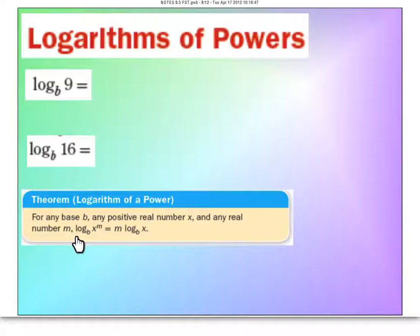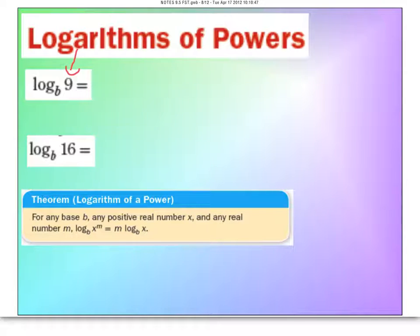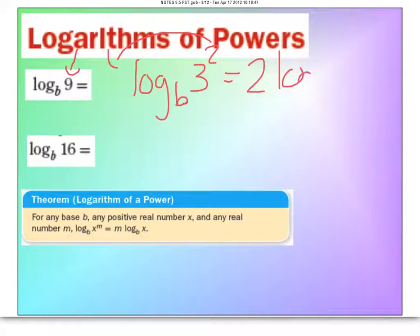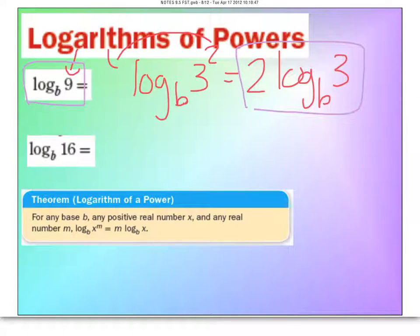Here is that fourth theorem more formally: if you have a log with an exponent, you can take the exponent and bring it forward. For example, log base B of 9 — you can restate it as log base B of 3 squared. With the exponent property, the 2 comes forward, giving you 2 times log base B of 3. These two are equivalent statements, and the second is considered simplified.